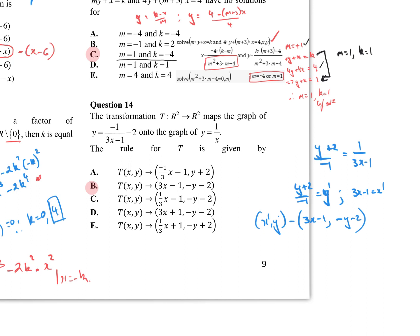Transformations that map the rule of negative 1 on (3x minus 1) minus 2 onto the graph of 1 on x. Rearrange my complicated function: (y + 2) over negative 1 equals 1 over (3x minus 1). I equate that to y equals 1 on x — that's my new function, my y-dashes. So x-dashed equals 3x minus 1 and y-dashed equals negative y minus 2, and that matches off to one of the options.